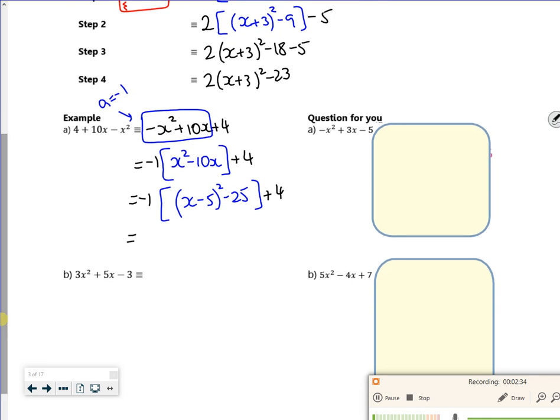I need to expand my brackets. So minus x minus 5 all squared, plus 25, plus 4, and tidy it up. There we go.